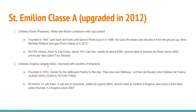Château Angélus, otherwise known as 'Angel's Bells,' sits over clay and sand with pockets of limestone. There's a common theme of limestone beneath Saint-Emilion's great wines. Founded in 1872, owned by the Desdouard family to this day — they also own Bellevue, La Fleur de Douard, and Château de Franc. And yes, Michel Rolland consults for them too. It's usually about 50% Merlot with a heavier dose of Franc. Retail price is around $600, with second label Carillon d'Angélus and a third label simply called Numéro 3 de Angélus since 2007.